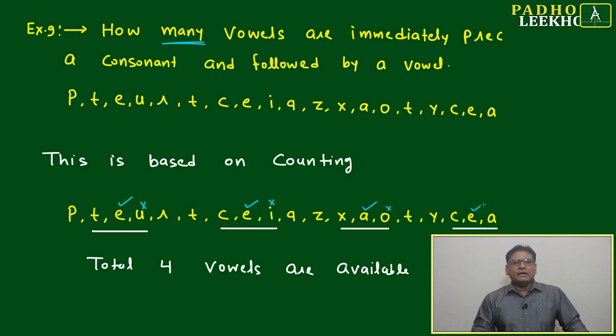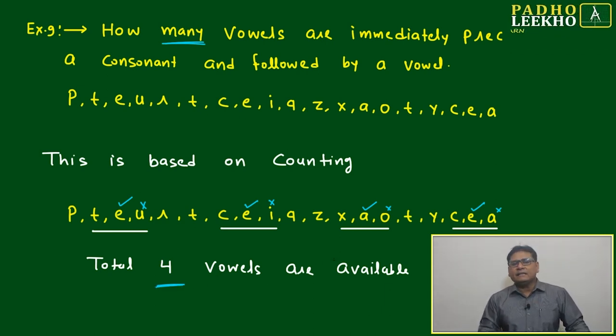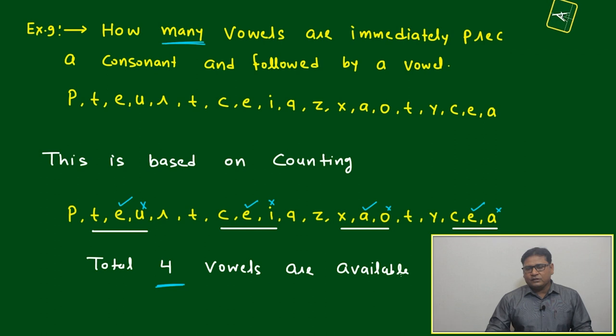E is followed, A is not followed. Total four vowels - E, E, A, E - are following the given condition.